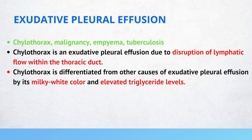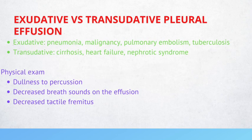A pleural effusion is basically excessive fluid in the pleural space. Once you see a pleural effusion, your next step is to think about whether it's transudative or an exudative pleural effusion. You can use the Light criteria to distinguish between them. For a transudative effusion, it's typically due to conditions such as left-sided heart failure, cirrhosis, nephrotic syndrome, peritoneal dialysis, or even atelectasis.